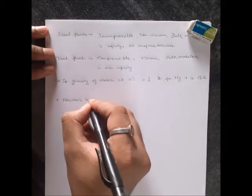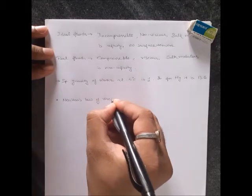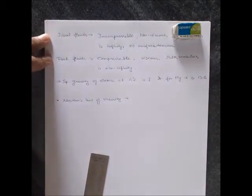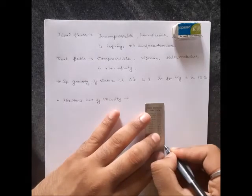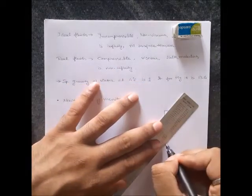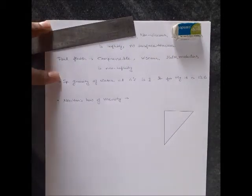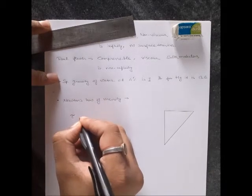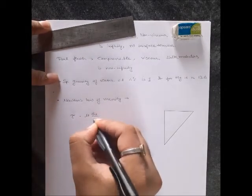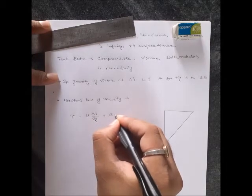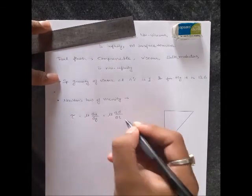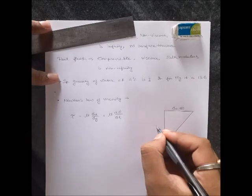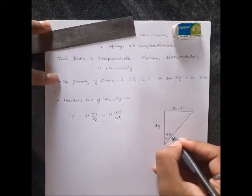Newton's Law of Viscosity says tau equals mu du/dy, also equals mu d theta/dt. This triangle shows the angle, where du/dt is here, dy is here, and the angle is d theta.